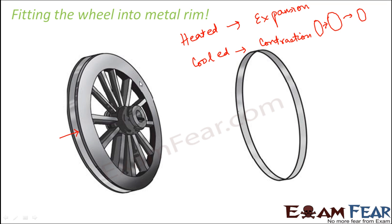When it contracts back to its smaller size, it tightly fits on the wheel. This concept of expansion and contraction is often used in many places, especially to fit machinery parts together precisely — you heat a substance so it expands, and cool it so it contracts.